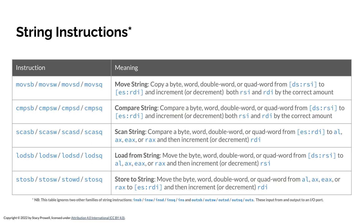In addition, these processors have string-oriented instructions. RSI is the source register, RDI is the destination register, and there is a direction flag. There are five basic operations. Move copies information from one location to another — it can copy byte by byte, word by word, double word by double word, or quad word by quad word from the source to the destination. It increments or decrements, depending on the direction flag, both RSI and RDI by the correct stride.